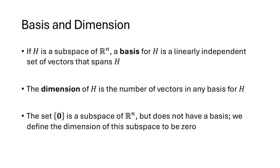In Lecture 30, we talked about the notion of basis, where when we have a subspace of Rn, a basis for H is a linearly independent set of vectors that spans H. We define the dimension of H to be the number of vectors in any basis for H. The set containing just the zero vector is a subspace of Rn, but this subspace doesn't have a basis, so we define the dimension of this subspace to be zero.